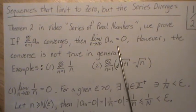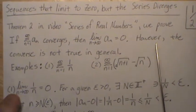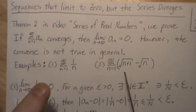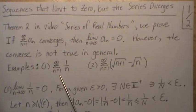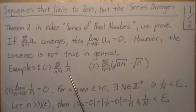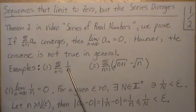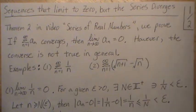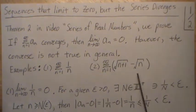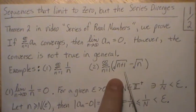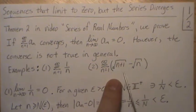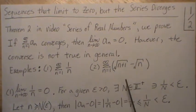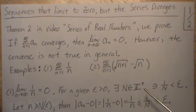However, the converse is not true in general. Here are two classic examples: the sum from one to infinity of one over n, these terms limit to zero but this series goes to infinity. And here too, the limit of this term goes to zero but the series diverges, goes to infinity.